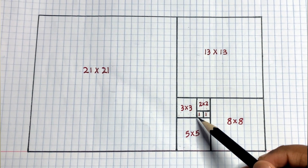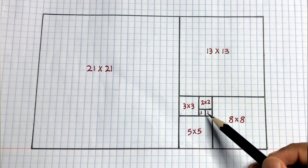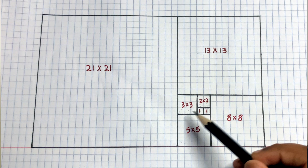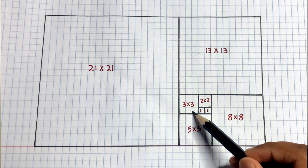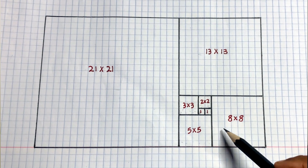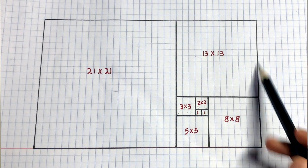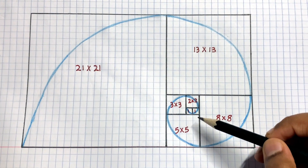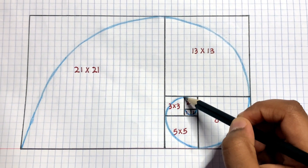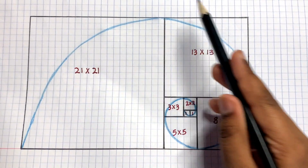When we draw this sequence on graph paper: 1 box for number 1, again 1 box for number 1, a 2 by 2 box for number 2, a 3 by 3 box for number 3, a 5 by 5 box for number 5, and it continues. When we connect these boxes from inside, joining the corner of each box, this takes the form of a spiral — called the Fibonacci Spiral.